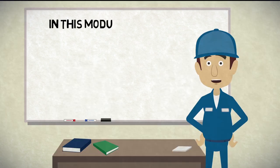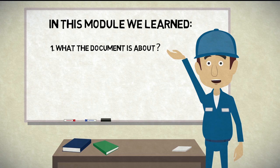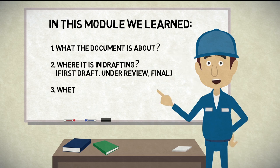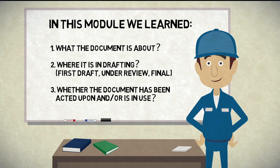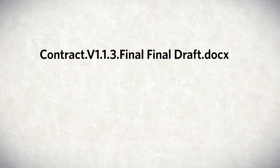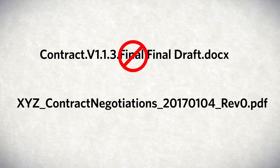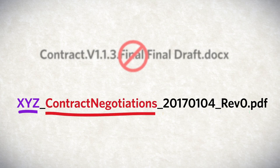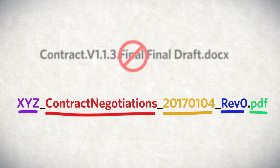To summarize, a standardized naming convention should tell us: 1. What the document is about, 2. Its drafting status, 3. Whether the document is in use. Compare this file title with this one. Based on the file name, we know that this record pertains to a specific contract concerning negotiations taking place on January 4, 2017. It is a final revision and it is in use since it is a PDF. That is a lot of information to get from a file name and format.